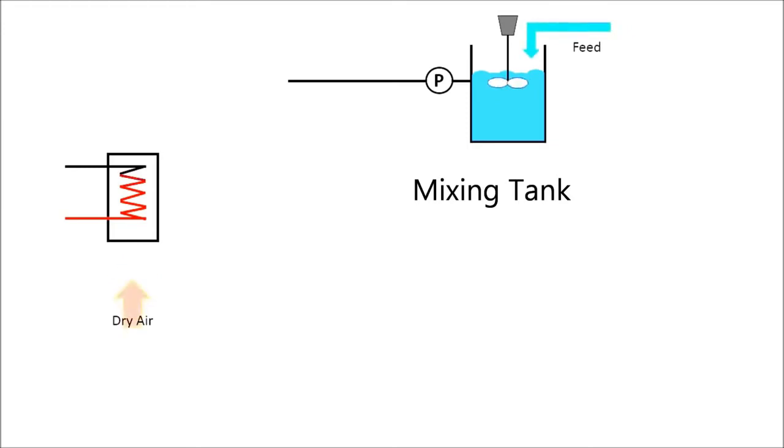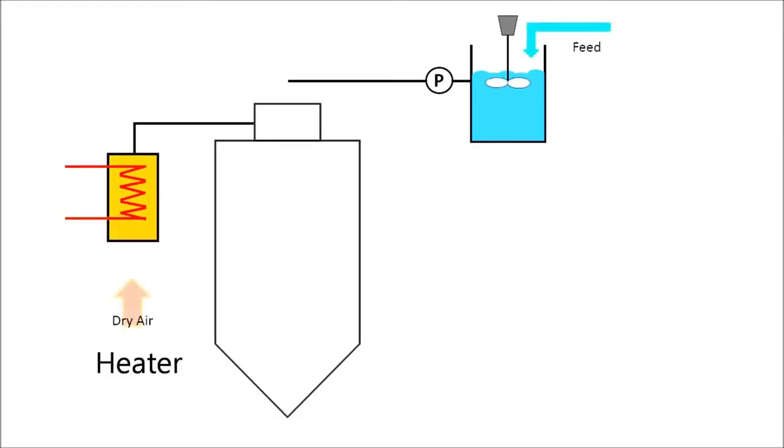At the same time, dry air is heated to high temperature by a heater. The heated air is then introduced through an air disperser which is mounted around the atomizer. The rotary atomizer then breaks the liquid into tiny droplets and disperses the slurry droplets into the heating chamber.